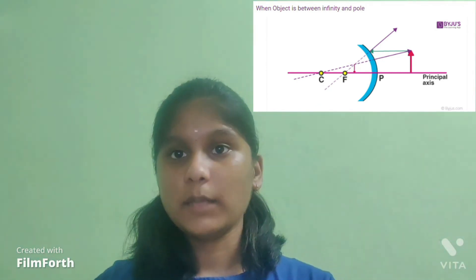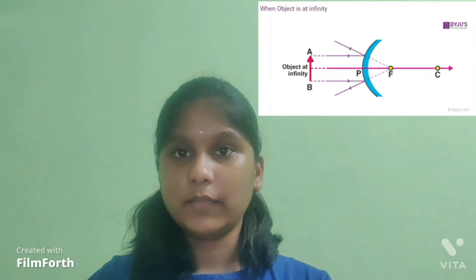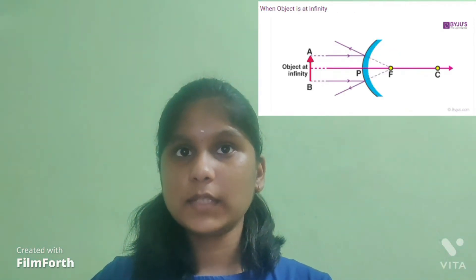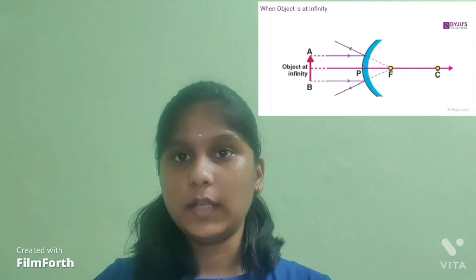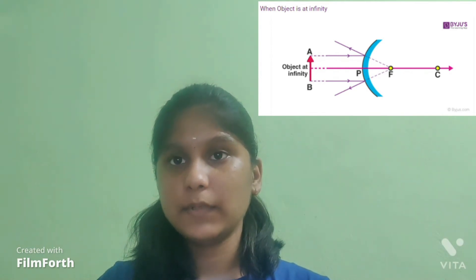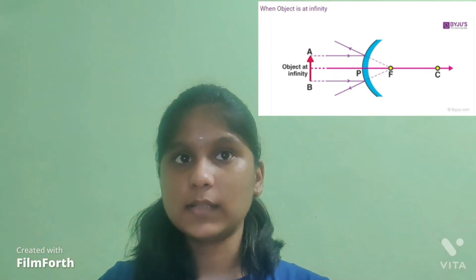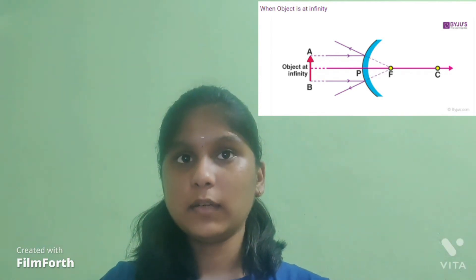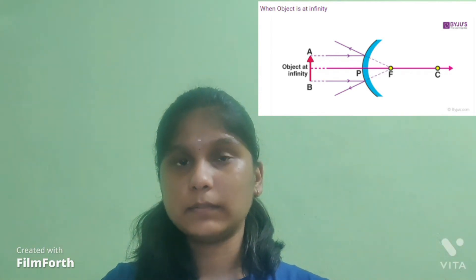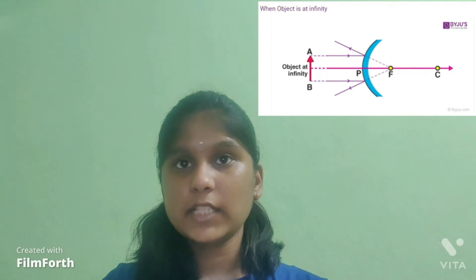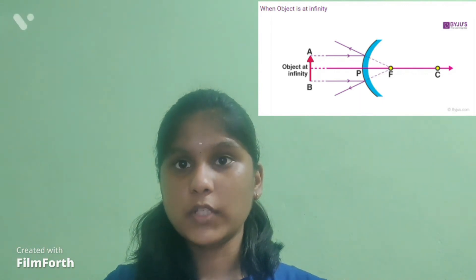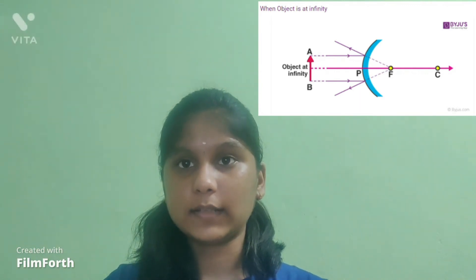When an object is at infinity, a point-size image is formed at the principal focus, that is behind the convex mirror. The image formed is highly diminished, virtual and erect.